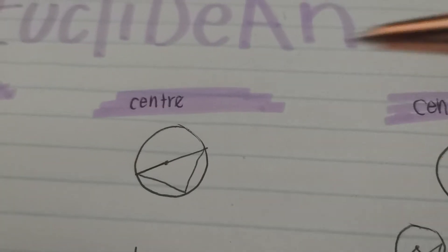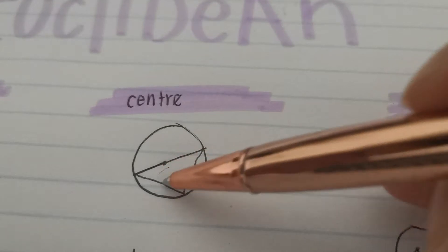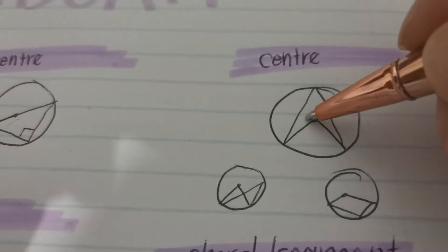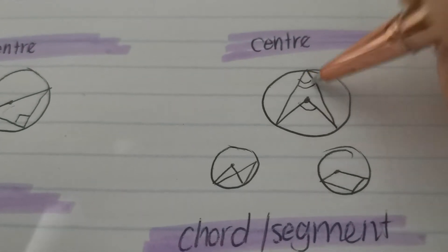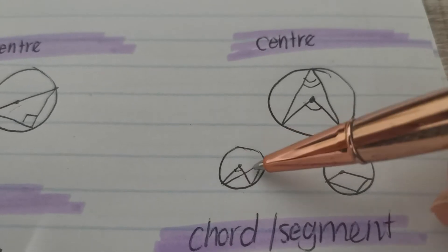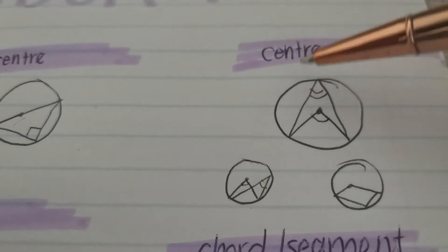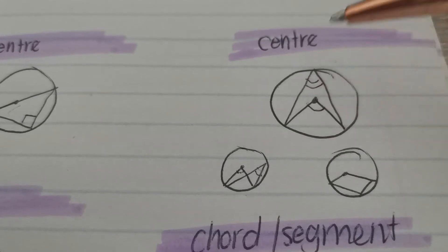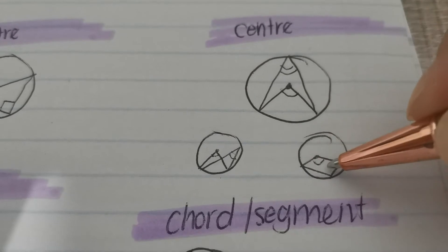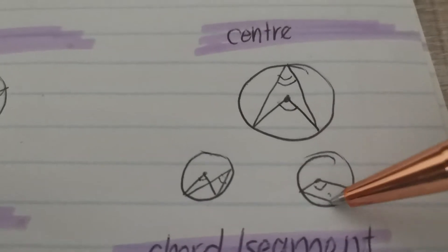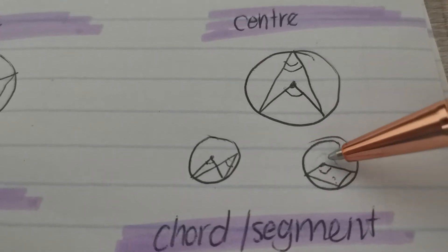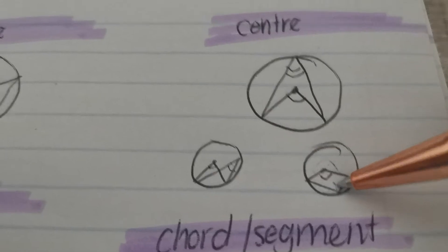The second one is that the diameter subtends a 90 degree angle. The third one is angle at center equals two times angle at the circumference. It could look like this, it could look like this. This angle here is two times this angle. Remember always, the one at the circumference is the smaller one.